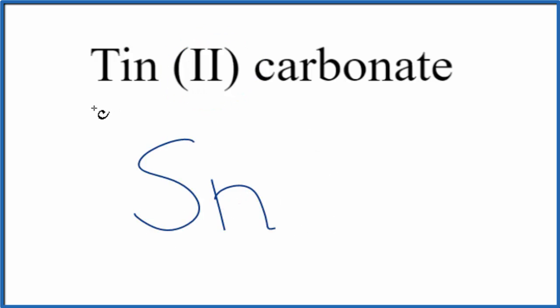And this 2 here tells us we have a transition metal, and the ionic charge there is 2+. So we have this tin(II) ion, then the carbonate.